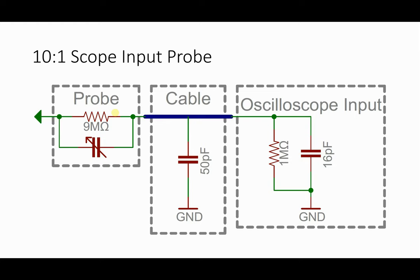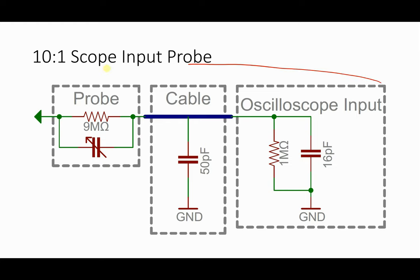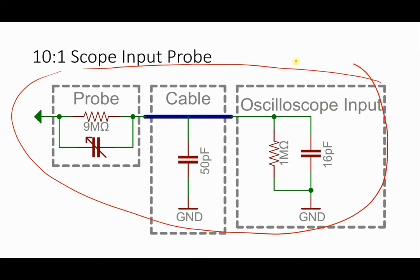So we don't want just a wire. Inside of this scope probe body, there's a little more than just a piece of wire — there's actually a resistor and capacitor. It's a large resistor: a 9 megaohm resistor and a capacitor that's typically tuned. There's often a little hole that you can change this capacitor.